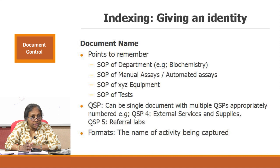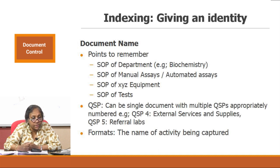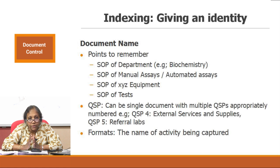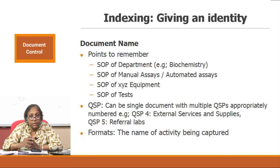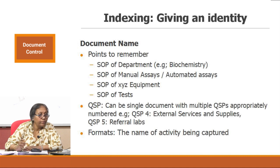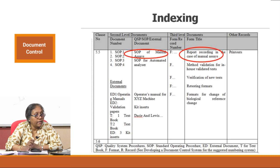QSPs can be held as a single volume or multiple QSPs appropriately numbered - for instance QSP number 4 external services and supplies, number 5 referral labs. If you hold SOPs together in one volume, one easy way is using box files. If you put pockets with one SOP per page, you can see both sides and if you have amendments, you can pick and choose without completely reissuing the document. Using box files with clear folder pockets is a system that works well in many places.